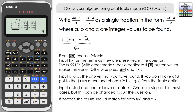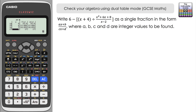Now, you don't always get 100% matching results with this technique. We're going to look at a second example where not all results match, and I'll explain why we can still be confident in the answer. The second question: write 6 - [(x+4) · (x²+6x+8)/(x-2)] as a single fraction in the form (ax+b)/(cx+d), where a, b, c, and d are integer values to be found — slightly more complex. Pause if you'd like to try it yourself.